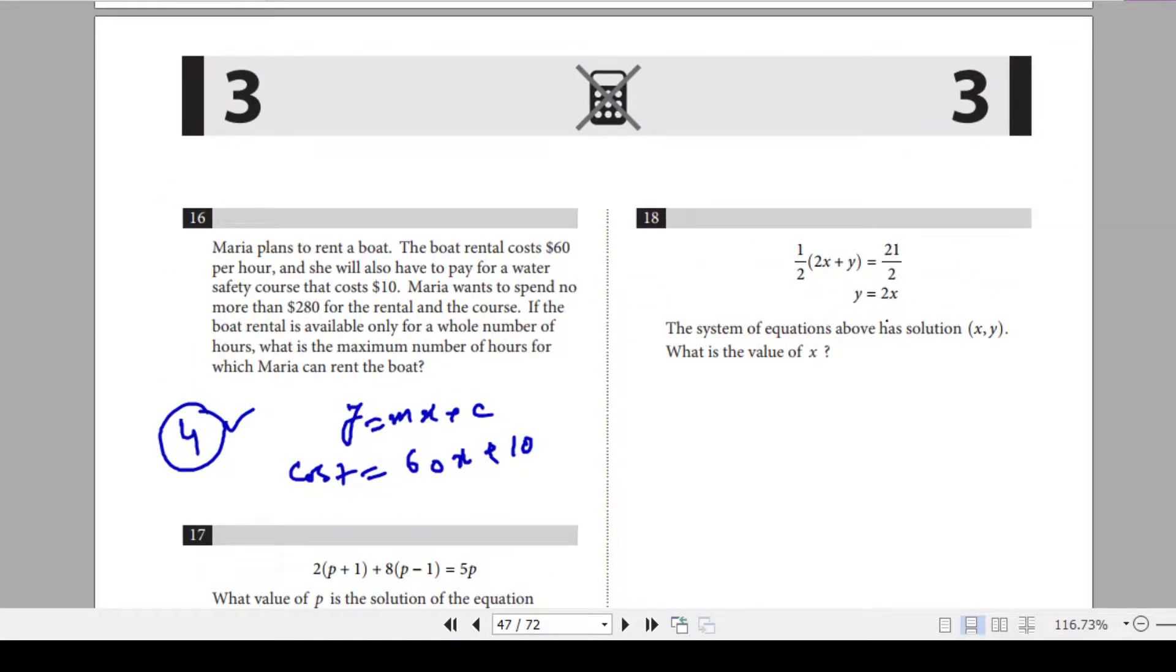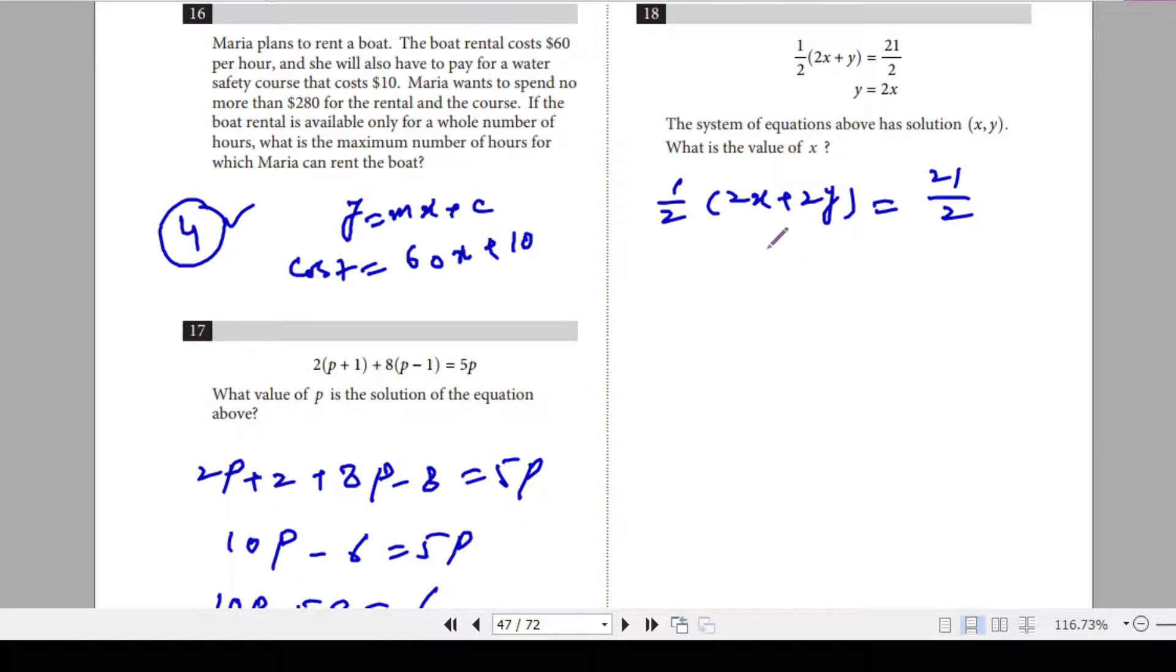Question 18. So these are two equations. The system of equations above has solution (x,y). What is the value of x? Simple. Y is equal to 2x, so you can plug in 2x here. That will be 1 over 2, 2x plus y is 2x. That will be 21 over 2. We just need to solve it.